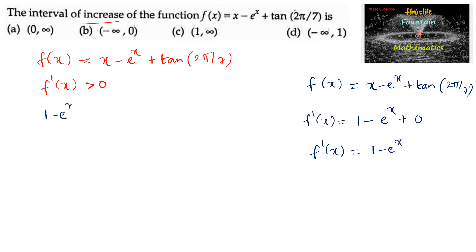So 1 - e^x > 0, or we can write e^x - 1 < 0, which means e^x < 1. We can write this as e^x < e^0, which implies x < 0 since e is positive.